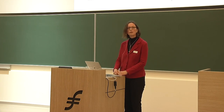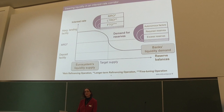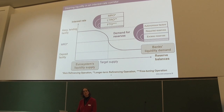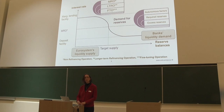The most important operations before the crisis were the main refinancing operations, conducted weekly with a one-week maturity, plus longer-term operations with three-month maturity conducted monthly, and fine-tuning operations when money markets experienced strains. Interbank rates will never go above the marginal lending facility rate because there is an elastic supply of reserves at that rate, and they will not fall below the deposit facility rate because banks can always store excess liquidity there.